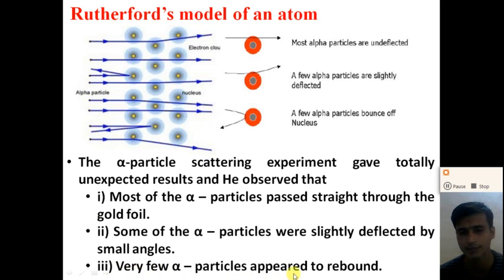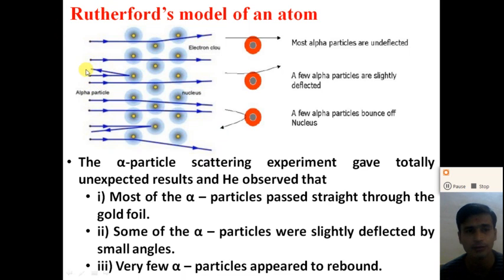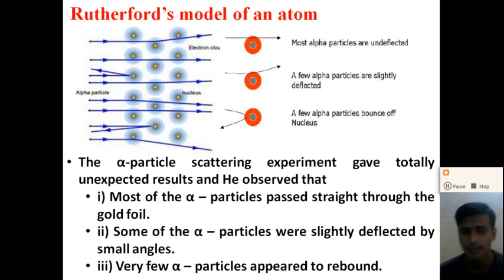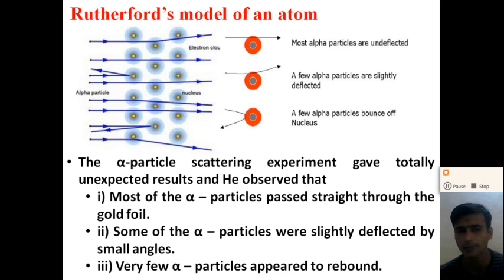And very few alpha particles — approximately 1 out of every 10,000 alpha particles — appeared to rebound back in the same direction as the incident alpha particle. That means when 10,000 alpha particles are incident, one of the alpha particles appears to rebound back in the same direction.